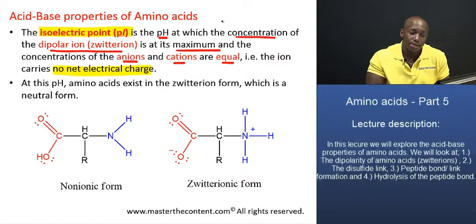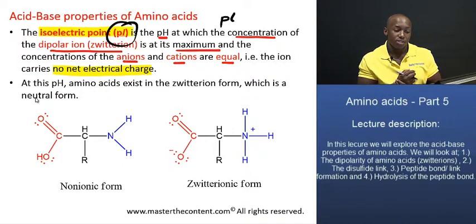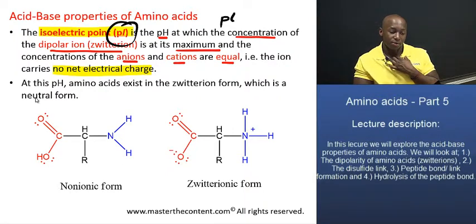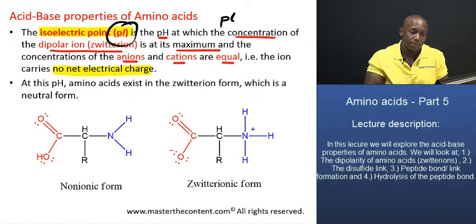which is denoted by that symbol right there. So as you can see at the bottom of the screen right there, we have the non-ionic form of what is a generic amino acid. So this is a generic amino acid.